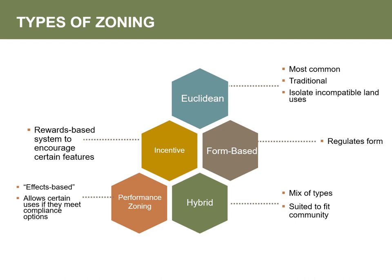Incentive zoning is a reward-based system to encourage development to meet development goals. A reward scale connected to the incentive provides an enticement for developers to incorporate desired development criteria into their projects. Common examples include bonuses like the ability to cover more of the lot when it includes some affordable housing units, and height limit bonuses for the inclusion of public amenities on site.